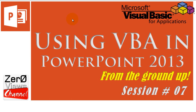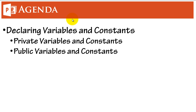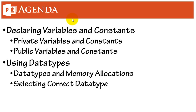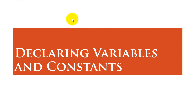Hello and welcome to session 7 of using VBA in PowerPoint 2013 from the ground up. In this session we have a definite agenda: we are going to look into declaring variables and constants, we're going to see what are private and public constants or public variables, and next we are going to see using data types, their memory allocations, and why selecting the correct data type is absolutely important.